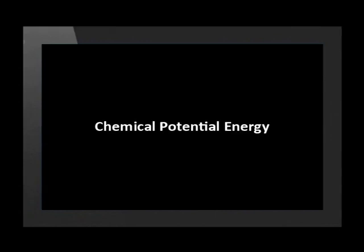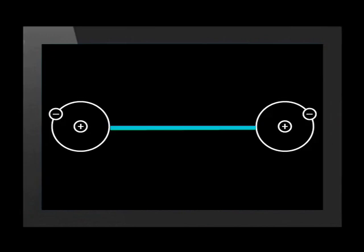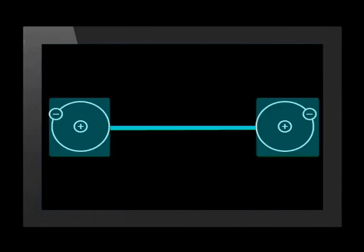Now we need to understand what chemical potential energy is. Chemical potential energy is the energy that exists because of electrostatic forces and the distance between two particles. In this case, between two hydrogen atoms.